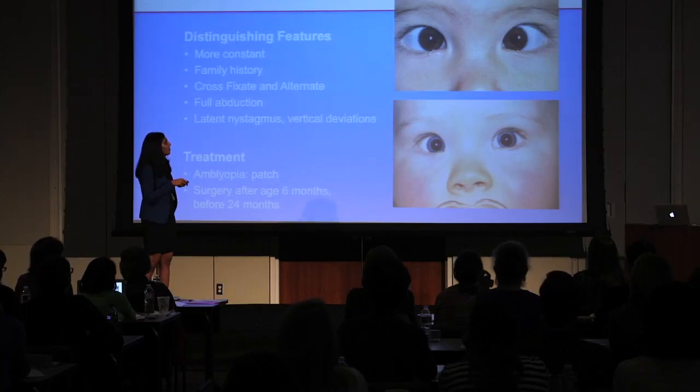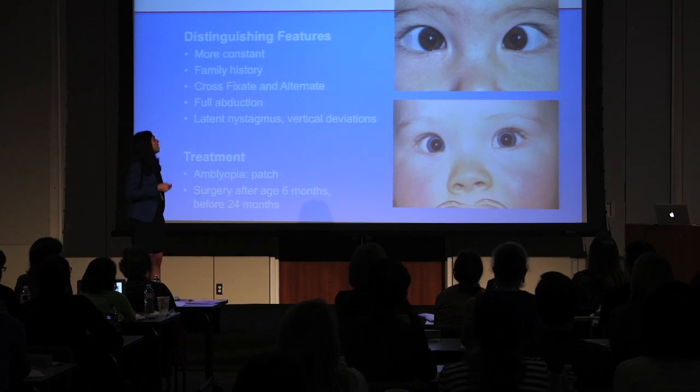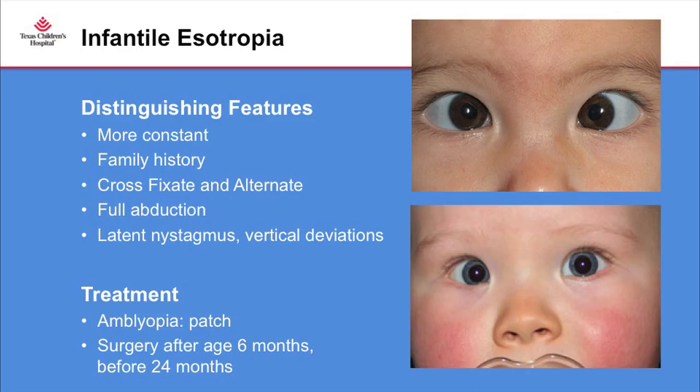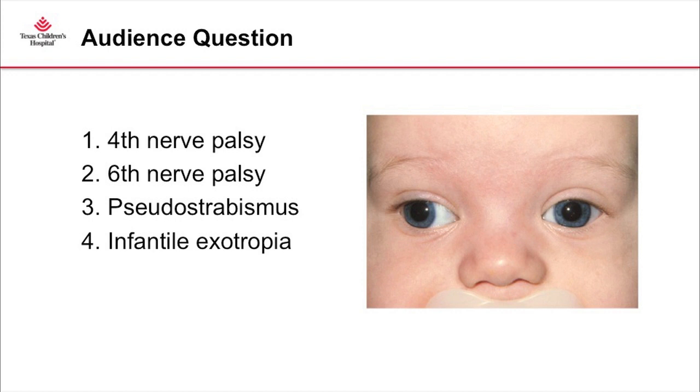Comparing the previous baby to one with infantile esotropia — they both have the same flat nasal bridge and wide fold of skin. The difference is the light reflex: here it is clearly temporally displaced, indicating a left esotropia. Infantile esotropia is more constant, sometimes there's a family history. These patients often cross-fixate and alternate — using the left eye to look right and the right eye to look left — and should have full abduction to rule out a sixth nerve palsy. It can be associated with latent nystagmus and vertical deviations. If amblyopia is present, patching is indicated; otherwise, surgery is recommended after age six months and before 24 months to promote binocular fusion.